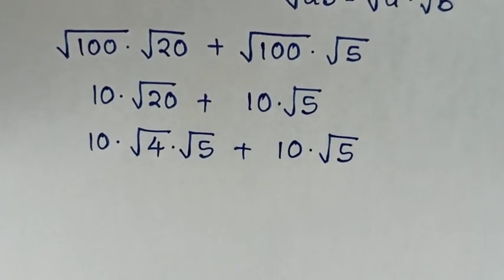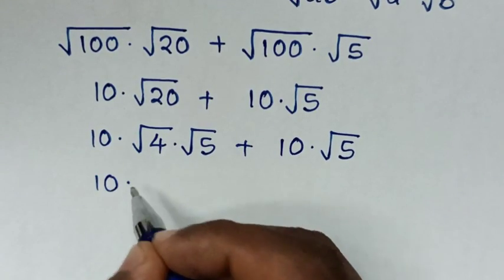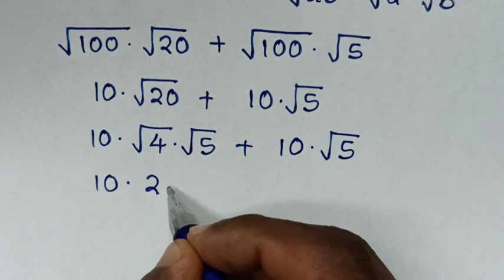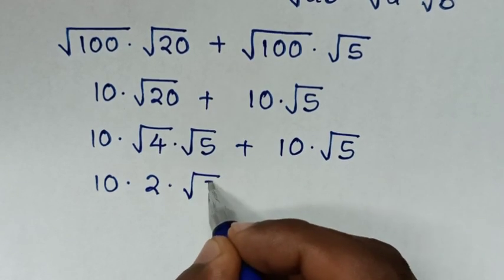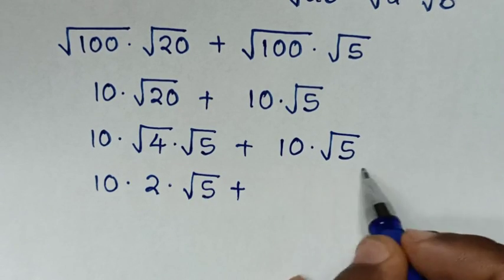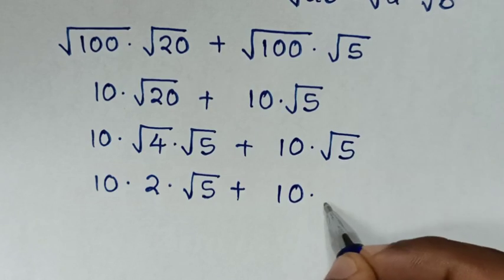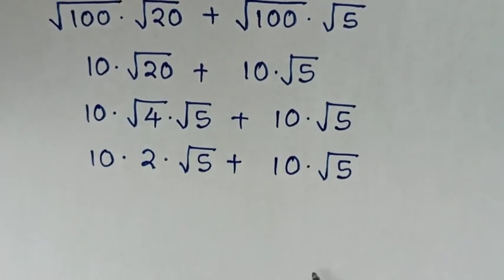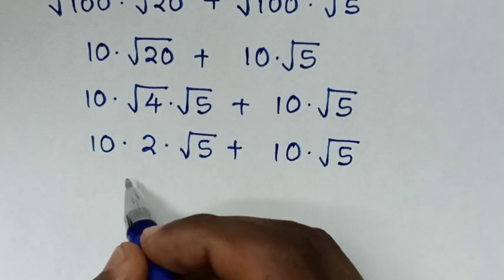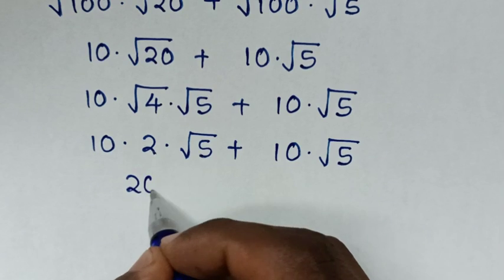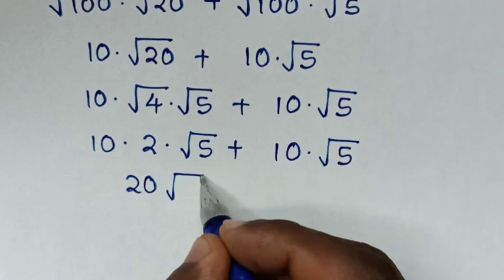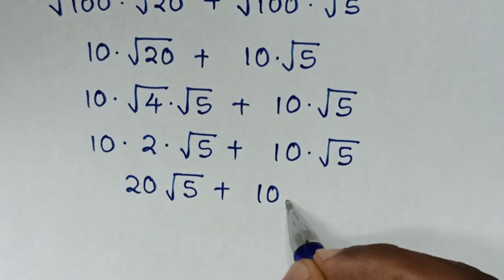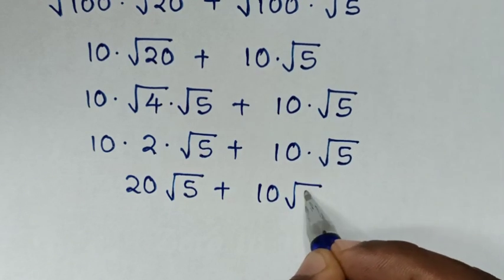In the next step, it will be 10 times square root of 4 is 2, times square root of 5, plus this 10 times square root of 5. Then, it will be 10 times 2 is 20, times square root of 5 plus this 10 times square root of 5.